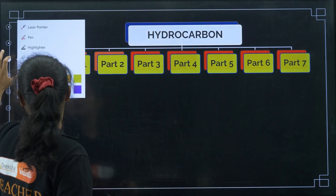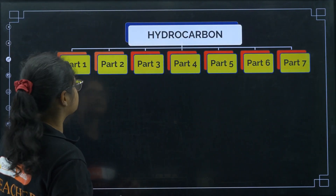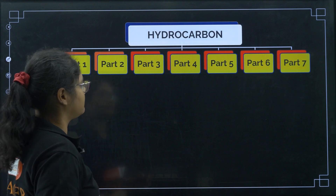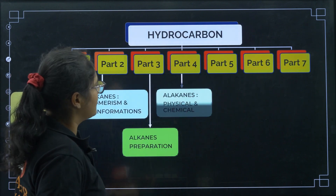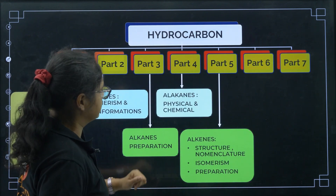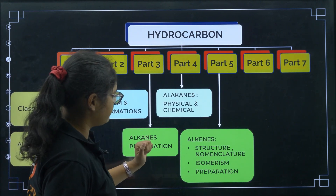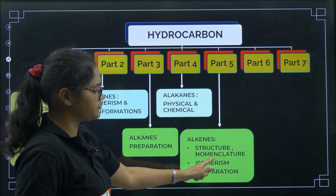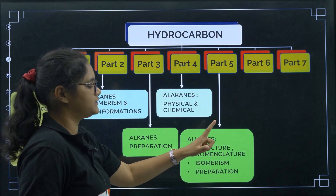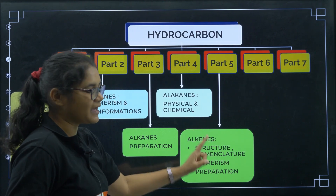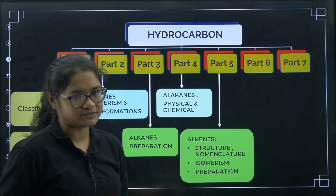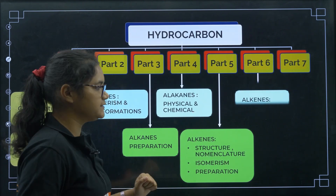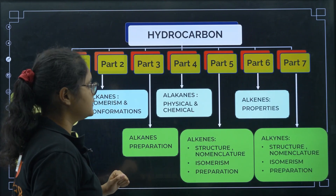Today we are in Part 5, where we will be talking about the structure, nomenclature, isomerism, and the preparation of alkenes.